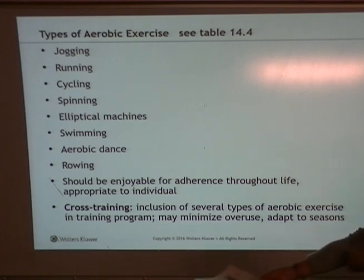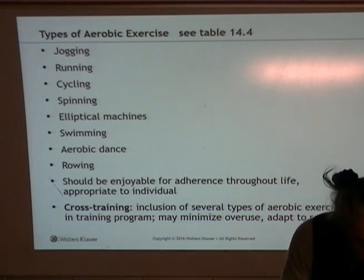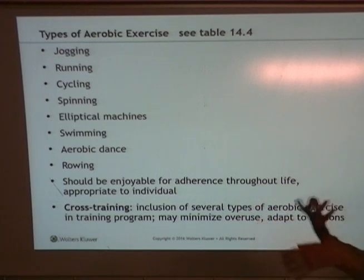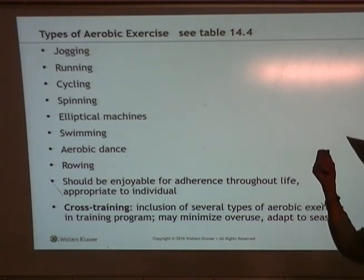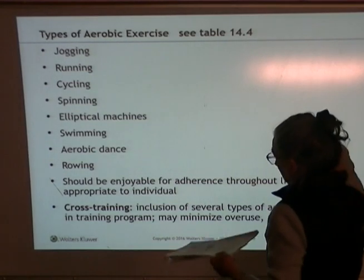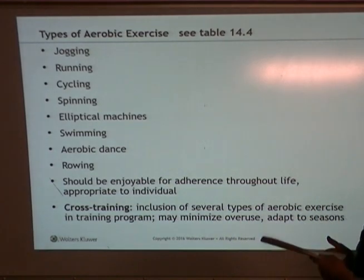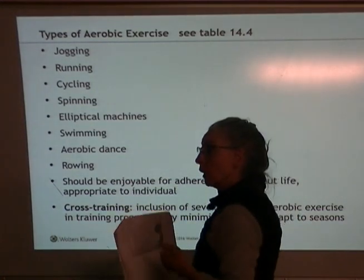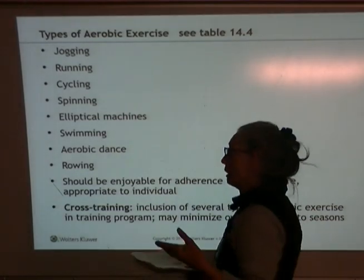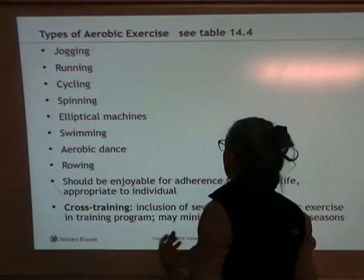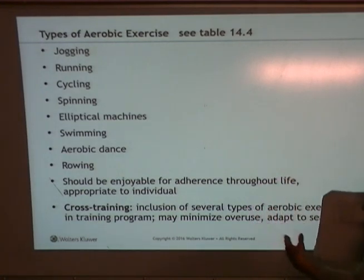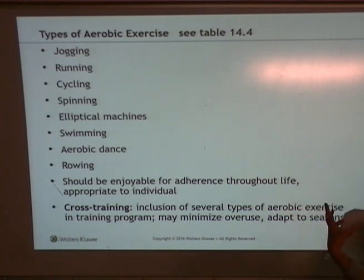There's a nice table 14.4 with lots of ideas for aerobic activity — different types depending on the level someone's willing to commit to. Any exercise-type movements count: jogging, running, speed walking or brisk walking, cycling, ellipticals, swimming, aerobic dance, Zumba classes, rowing. We've got lots of sporty exercises that would count for aerobics, but it's got to be something the person enjoys so that they stick with it.